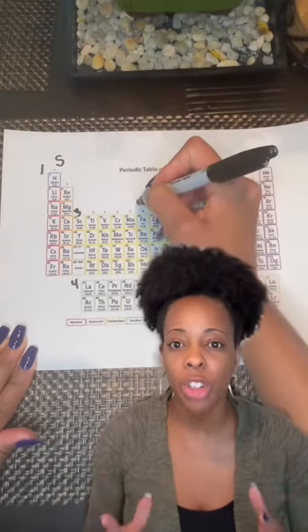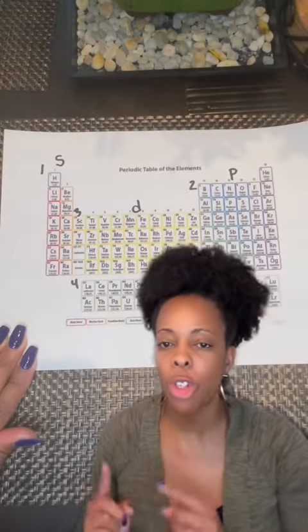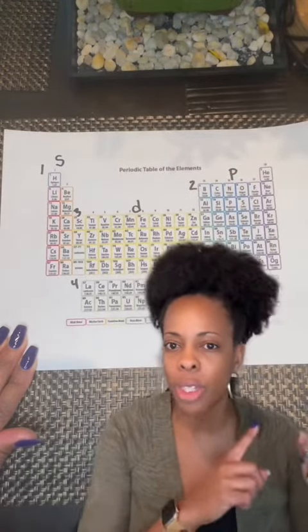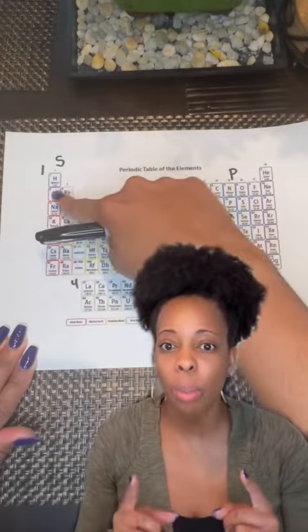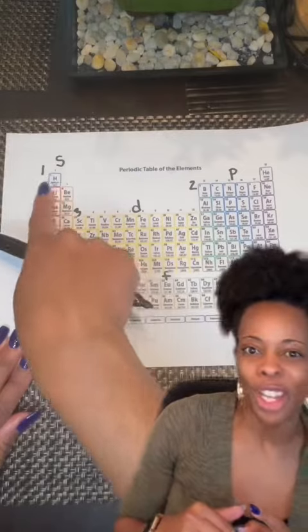Then you're going to label each of the groups or columns with their appropriate subshells. So put an S for those first two columns, a P for the second six, a D for the middle one, and then an F for the bottom one, the inter-transition.